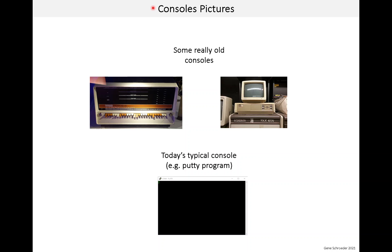I always like to look at old pictures of computer stuff, and here are some of old consoles. This first one is from a DEC PDP-8 computer, probably from the 1970s — a little before my time. All it had was LEDs for output and switches for input. This console is from a DEC VAX computer from the 1980s, which is when I started my career, and the console would just be this terminal sitting on top. Today's console is typically a program like PuTTY running on a laptop, and one nice thing is you can set up the program to store all console activity in a file, so if you have any logging coming out of your system, it would all get saved.